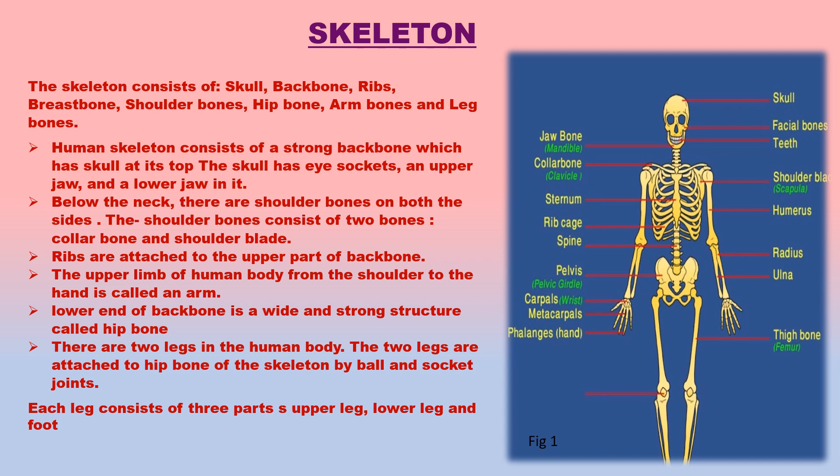The lower limbs on which a person walks or stands are called legs. Each leg consists of three parts: upper leg, lower leg and foot. The upper leg is from hip to knee, and consists of a single bone called femur, commonly known as the thigh bone. The lower leg is from knee to ankle.